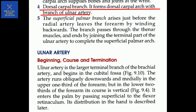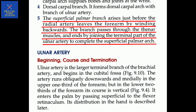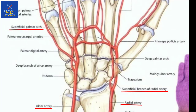Fourth, the dorsal carpal branch, also known as part of the dorsal carpal arch. Fifth, the superficial palmar arch arises just before the radial artery leaves the forearm by winding backward. The branch passes through the thenar muscles and joins the terminal part of the ulnar artery to complete the superficial palmar arch. This superficial palmar arch is in the superior part of the hand just where the radial artery winds backward, passing through the thenar muscle.